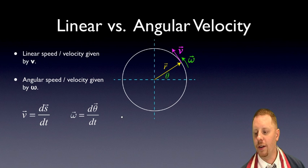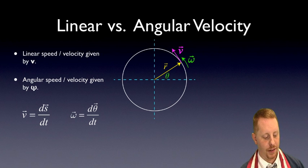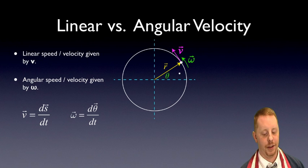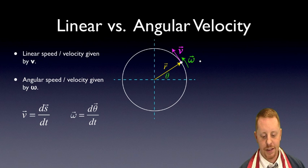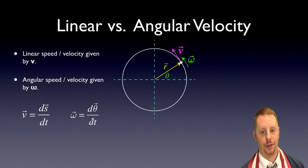We can also look at linear versus angular velocity. Linear speed or velocity, whether scalar or vector, is given by V. Angular speed or velocity is given by the Greek symbol omega, ω, and both are vectors. An object in uniform circular motion has a velocity tangent to its path, V, and an angular velocity ω describing how fast it goes around the circle. The velocity vector is the rate of change of position with respect to time; the angular velocity vector is the rate of change of angular displacement θ with respect to time. They are very closely parallel to each other.